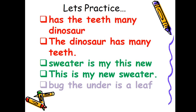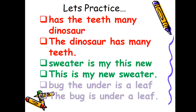Last one: 'the bug under is a leaf.' This is also not making sense. Let's make a sentence. Here is the answer: 'The bug is under a leaf.' This is a sentence with complete meaning. I hope you have understood that a sentence is a group of words that makes or tells a complete thought or complete meaning.